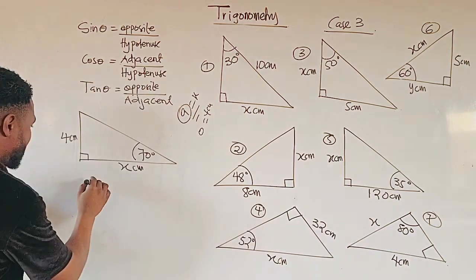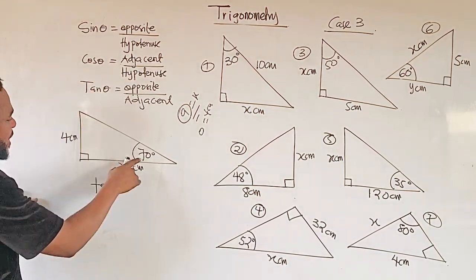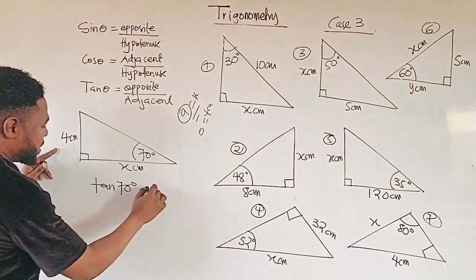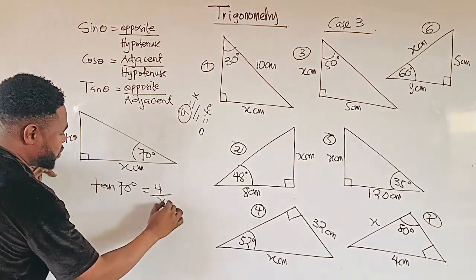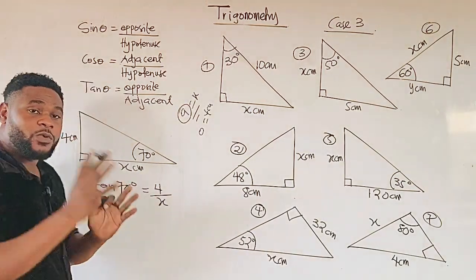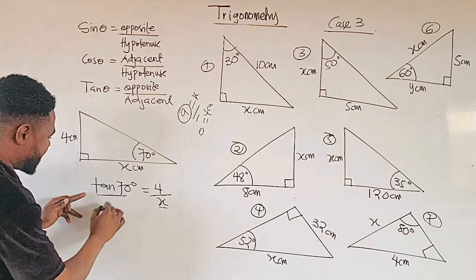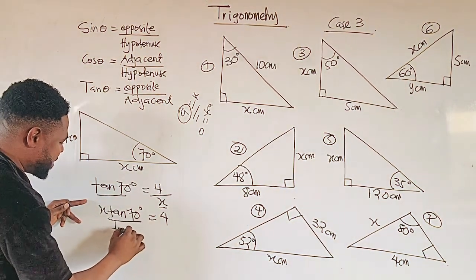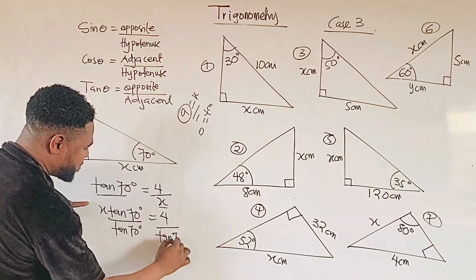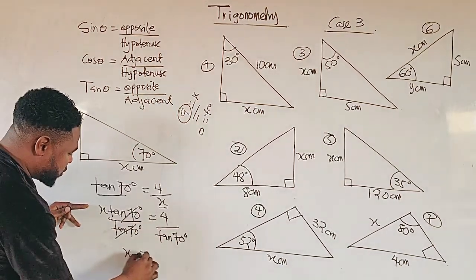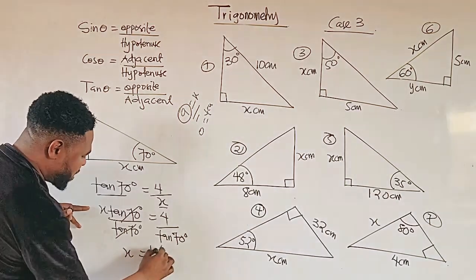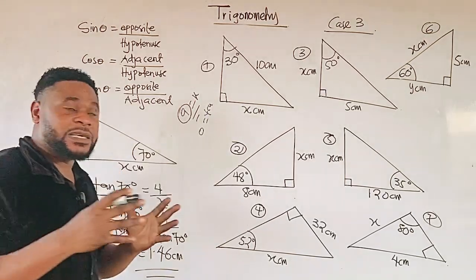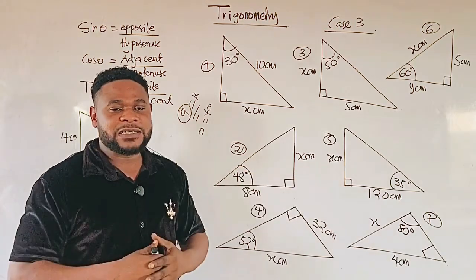Let's see how we can do it. I'll write my tan. The angle here is theta, but the angle given in the question is 70. So we say tan 70 equals opposite over adjacent, and our opposite is 4 and adjacent is x. I'm looking for x, so I'm going to perform cross multiplication: x tan 70 equals 4. Divide both sides by tan 70 — this will cancel — and to 2 decimal places I get x equals 1.46 centimeters. Use the same approach to answer the following questions and leave your answer in the comment section.